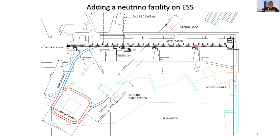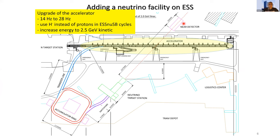In order for the ESS to host the neutrino facility, specific upgrades are required. First, we need to upgrade the accelerator to avoid disturbing the neutron beam. We will increase the beam rate from 14 Hz to 28 Hz, or from 4% to 8% duty cycle, and use H-minus ions instead of protons for the ESS injection cycles. The energy will also be increased from 2 to 2.5 GeV kinetic energy.